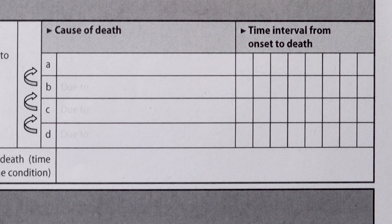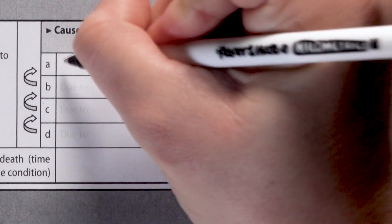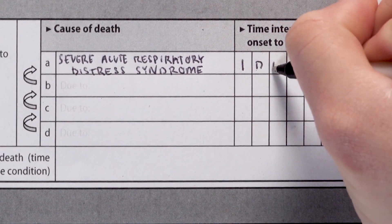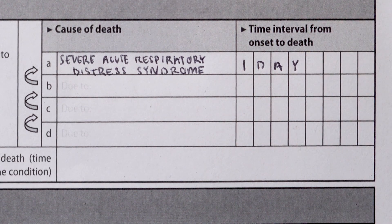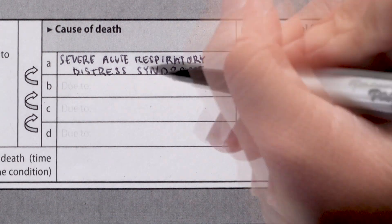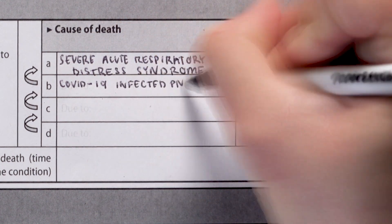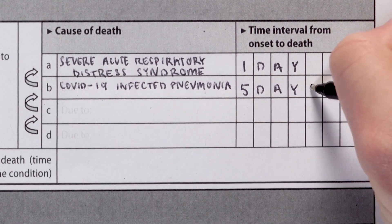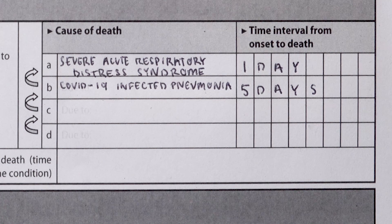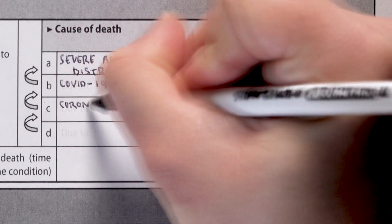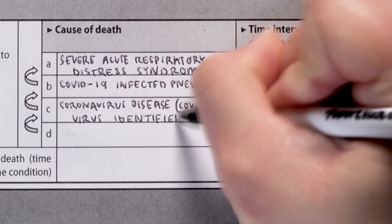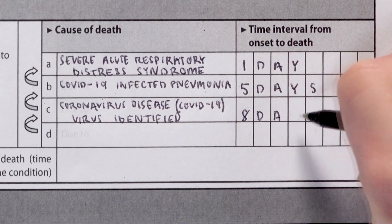Start with part 1 of frame A. In line 1A, detail the direct cause of death as severe acute respiratory distress syndrome, with a time interval of 1 day from onset to death. In line 1B, detail the previous diagnosis as COVID-19 infected pneumonia, with 5 days as the time interval from onset to death. In line 1C, detail the confirmation of COVID-19 positive results as coronavirus disease (COVID-19), virus identified, with 8 days as the time interval from onset to death.